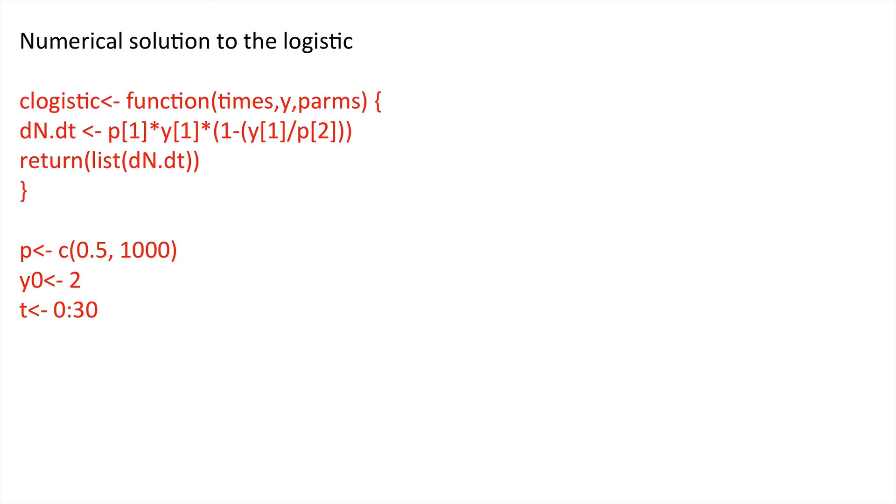Now, let's have a look at how we define our parameters. Here's p at 0.5 for r and here is the second parameter. This is K and we're going to give it 1000.